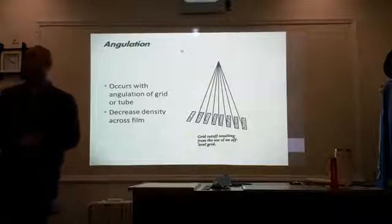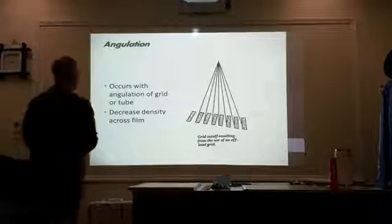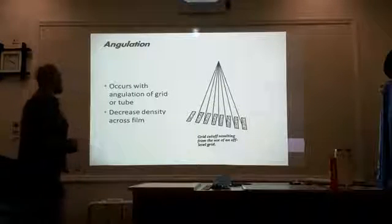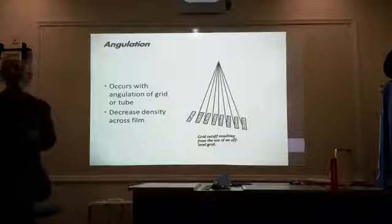Angulation occurs when there is an angulation of the grid or the x-ray tube. You are going to have decreased density across your image.